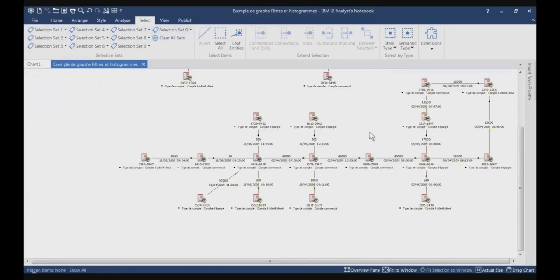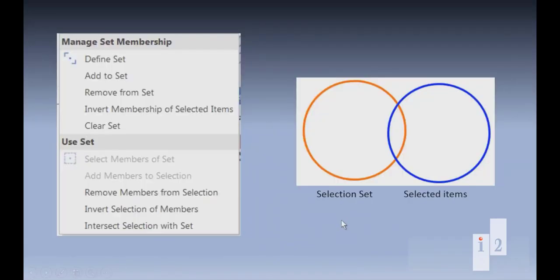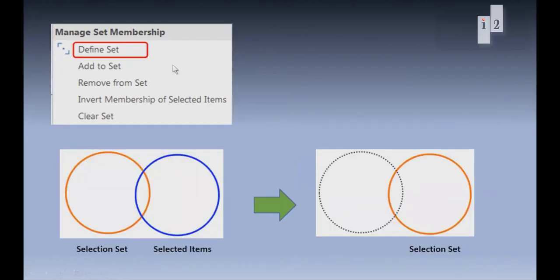To help you better understand the different functions available, I made some drawings. For the selection sets diagram, I drew two circles: one in orange representing items which are part of the selection set, and one in blue representing all selected items on the chart, with the middle showing items which are both part of the selection set and currently selected. For Define Set: it takes all items currently selected and creates a new set — if there were already items in the selection set, they will be removed and replaced by all the currently selected items.